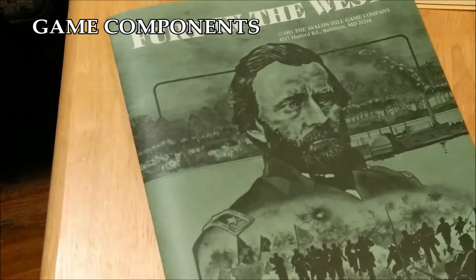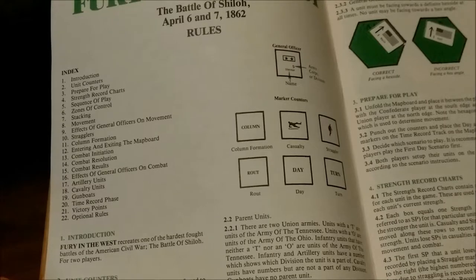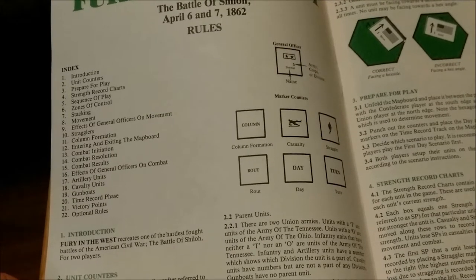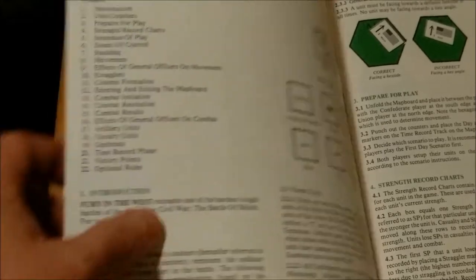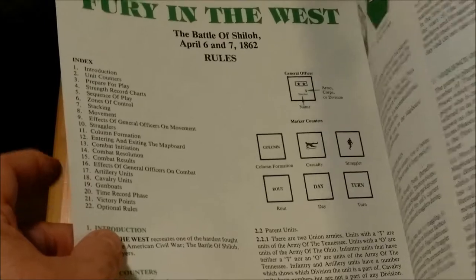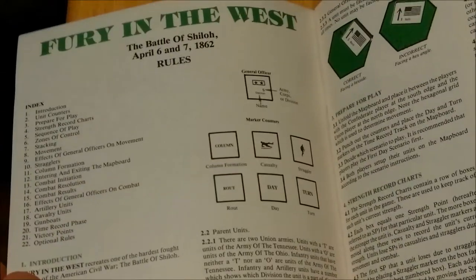Fury in the West Game Components - Rules Booklet. The Rules Booklet is about 22 pages long. It is printed on matte paper. For the most part, it is about three colors: mostly black, white, and green.